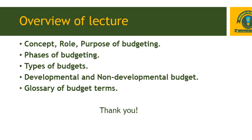At the end, let's summarize what has been learnt in this lecture. We have gone through the concept, role, and purpose of budgeting. Then we saw the five phases of budgeting — how a budget is made and developed. Then we covered the three basic types of budgeting, compared the developmental budget with the non-developmental budget, and at the end saw some glossary budget terms, of which four terms were described. Others will be covered in the coming lecture with a new handout on glossary terms. This is the end of the lecture — I hope you have understood the concepts. Thank you.